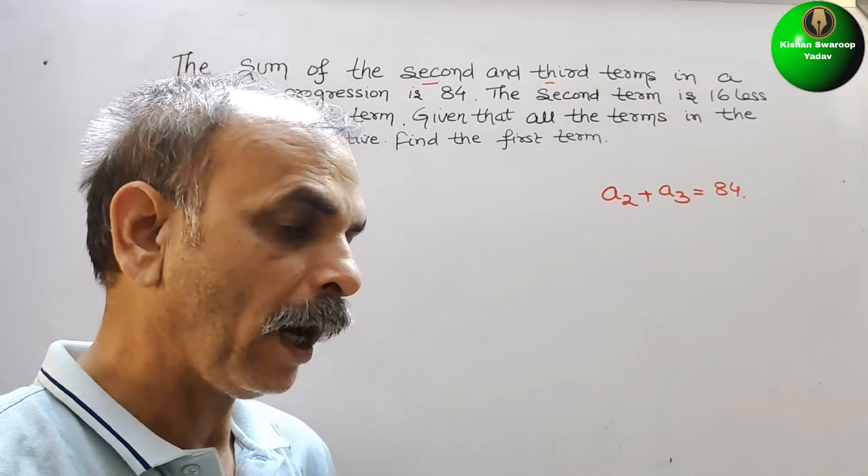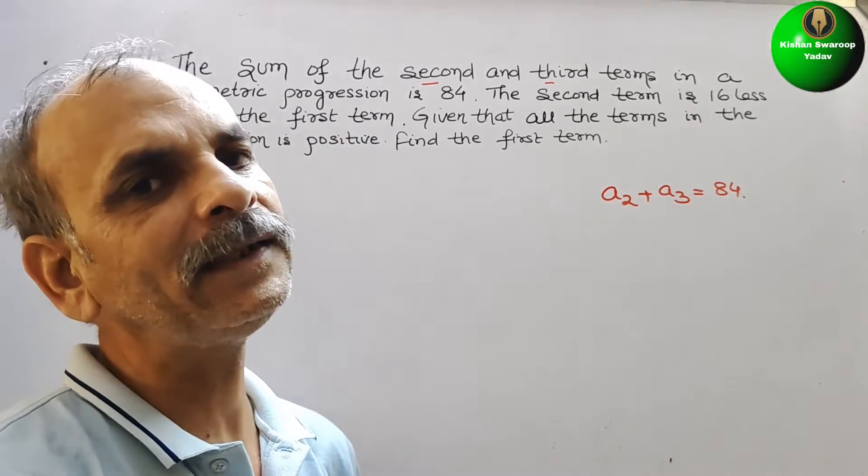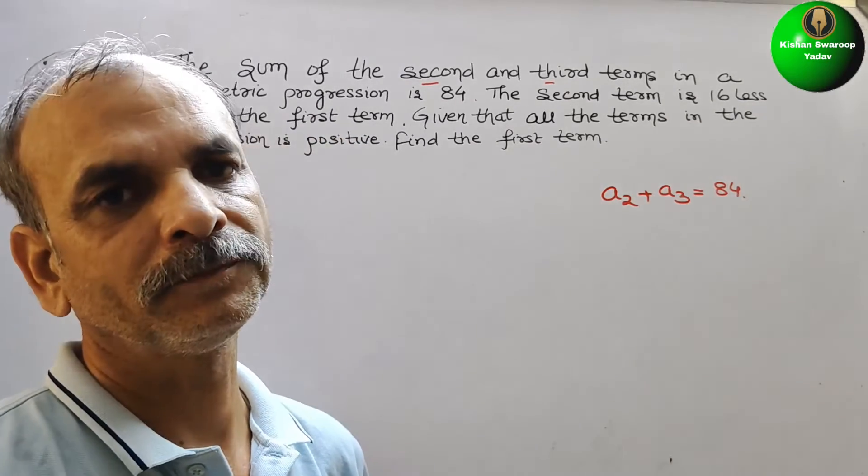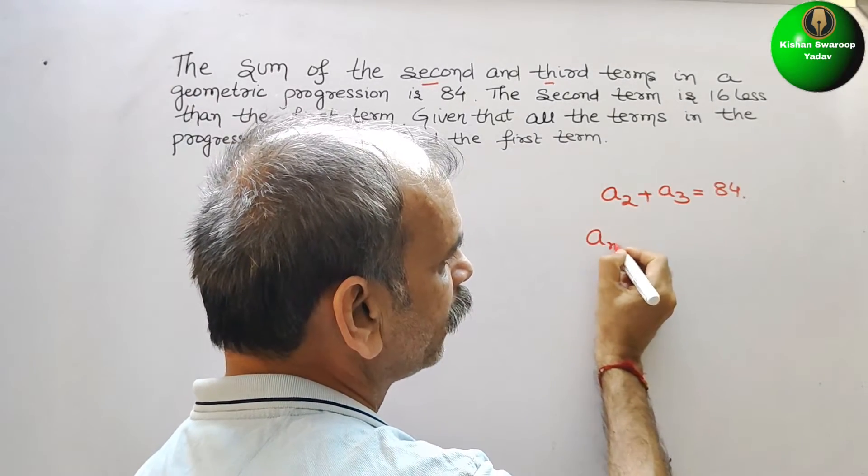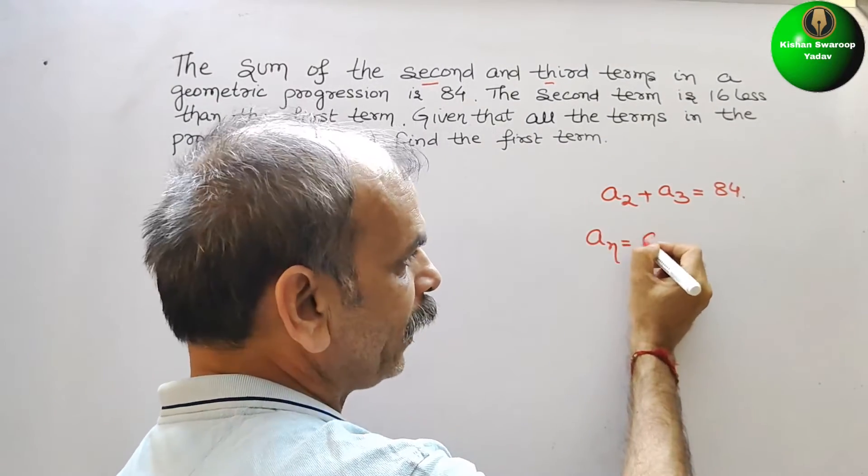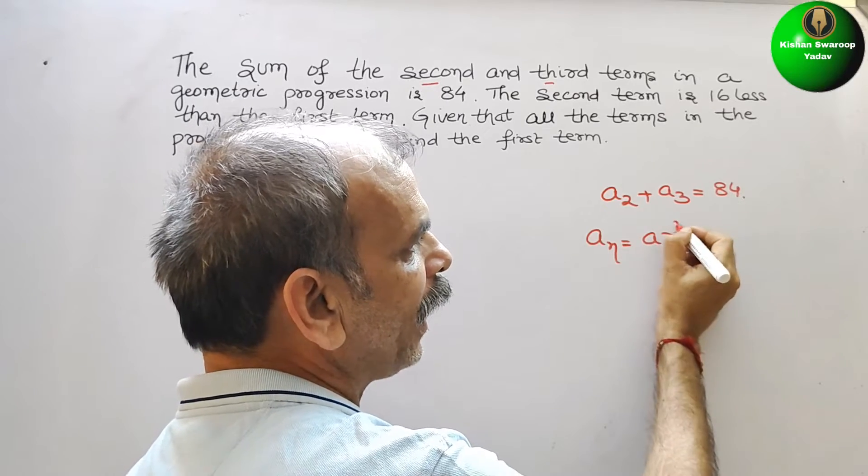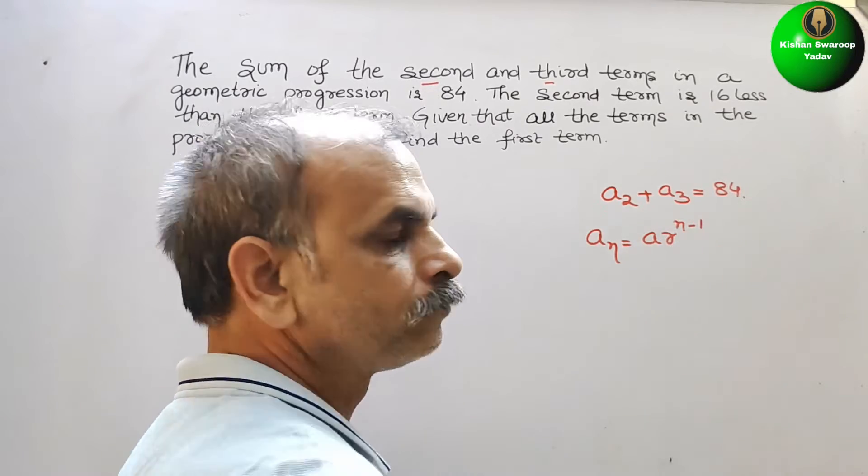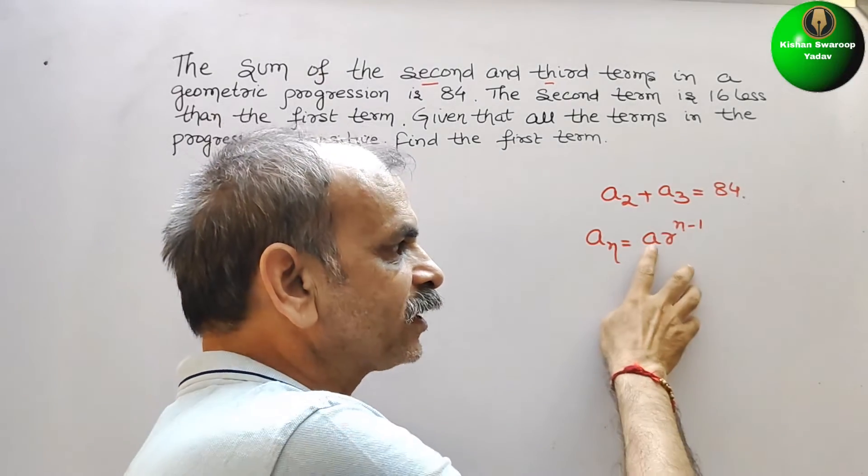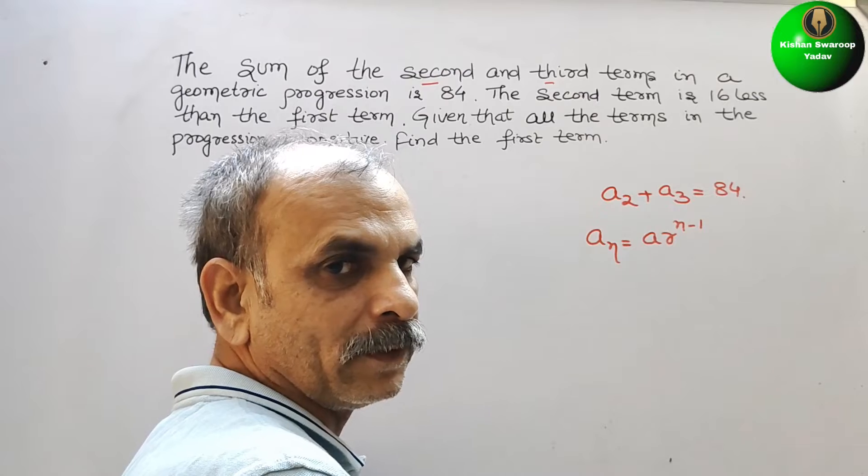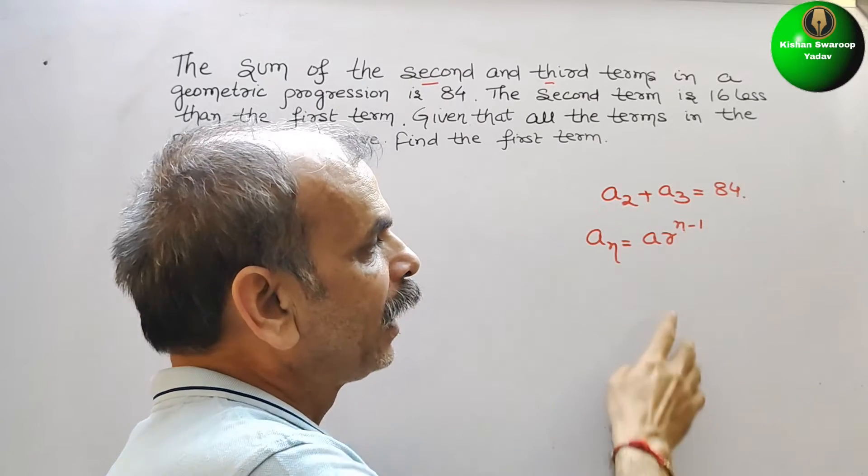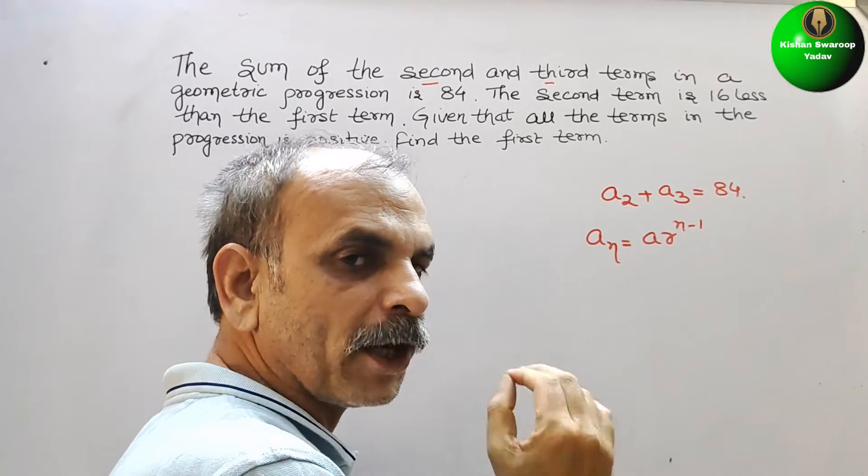First we will know how to rewrite nth term. So the formula for that is an equals a times r to the power n minus 1. Here a stands for the first term, n stands for the nth term or number of terms, r stands for your common ratio.